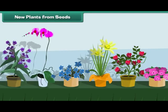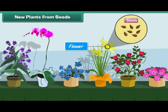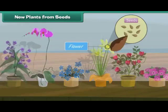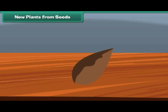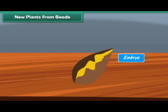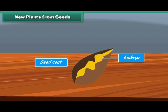New plants from seeds: Flowering plants produce seeds. Each seed produced by a plant has a baby plant inside it, called an embryo. The seed is surrounded by a tough covering called the seed coat, which protects the baby plant and prevents the drying up of the seed.